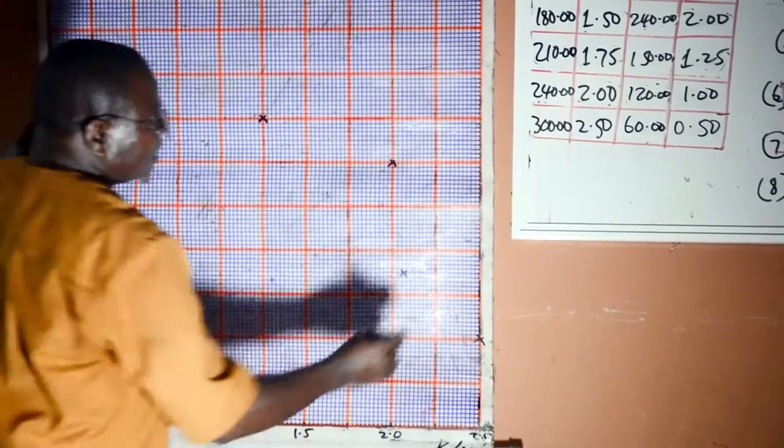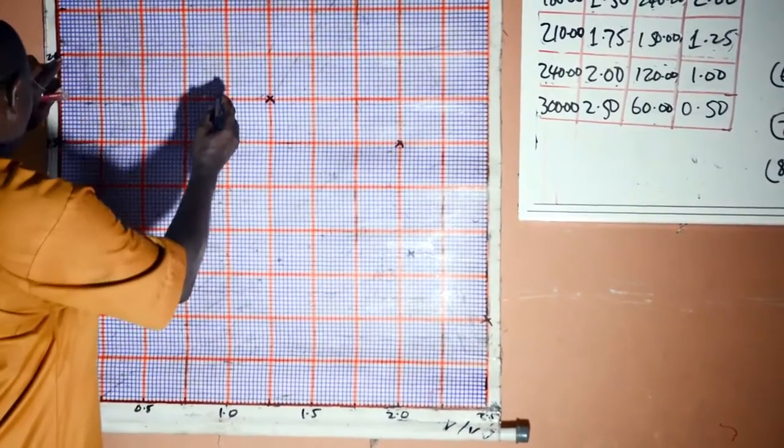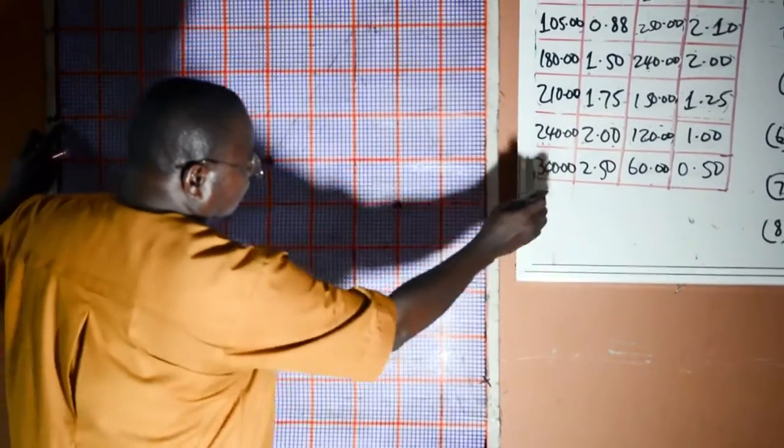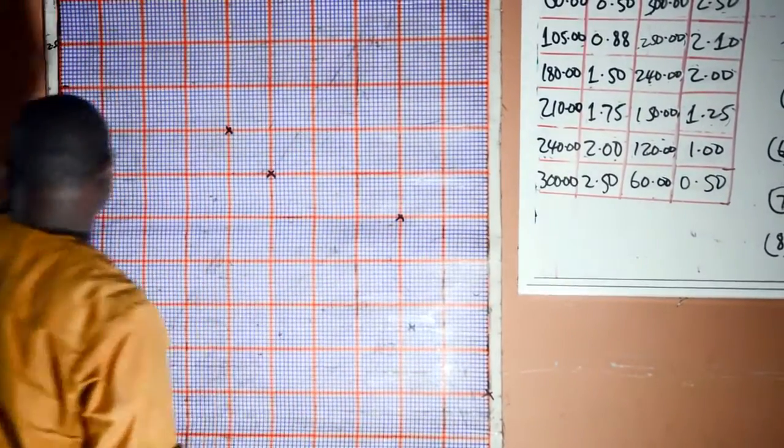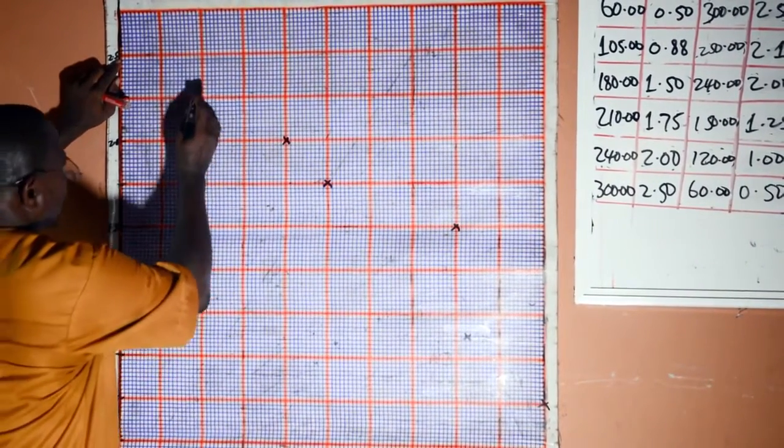Now the next one is 2 against 1. This is 2, this is 1. The next one is 2.5 against 1.5. This is 2.5, this is 1.5.